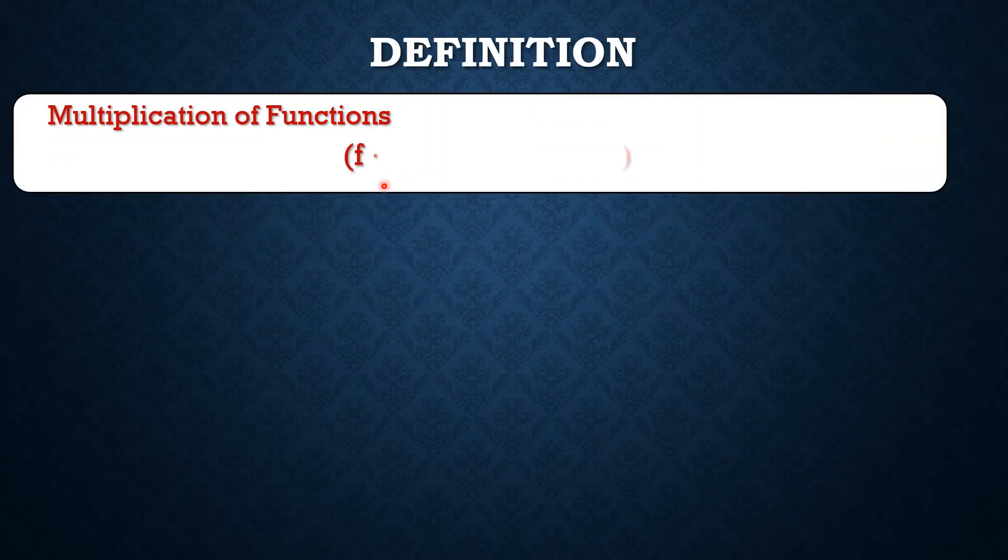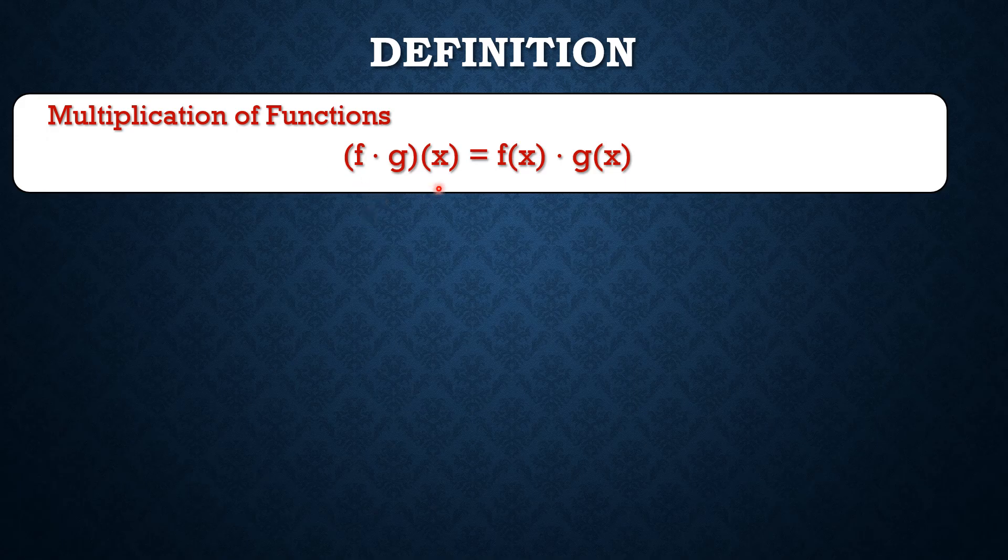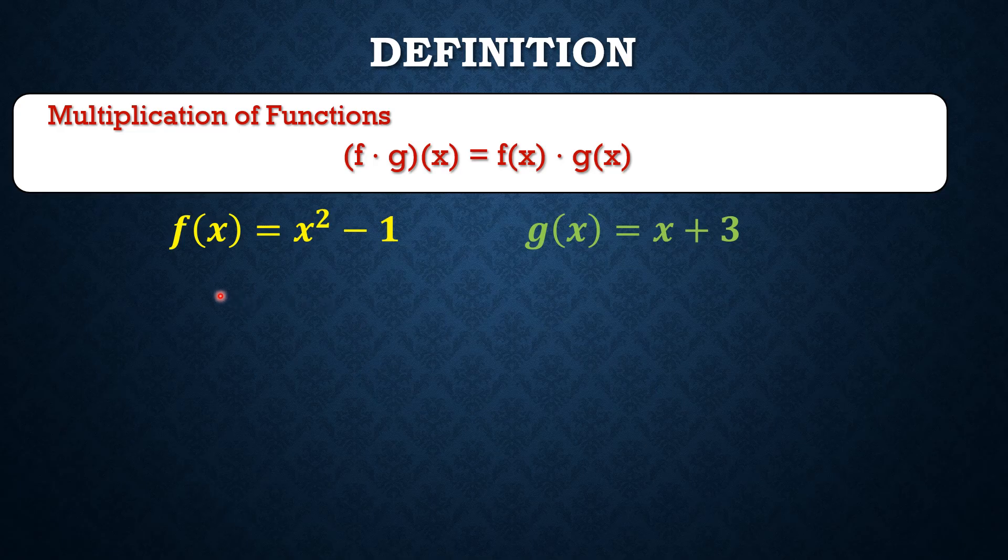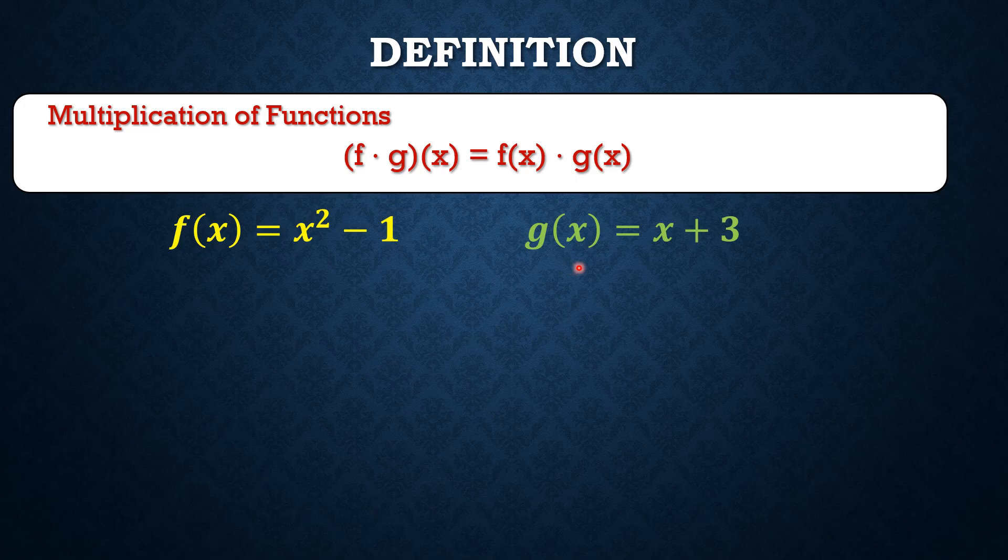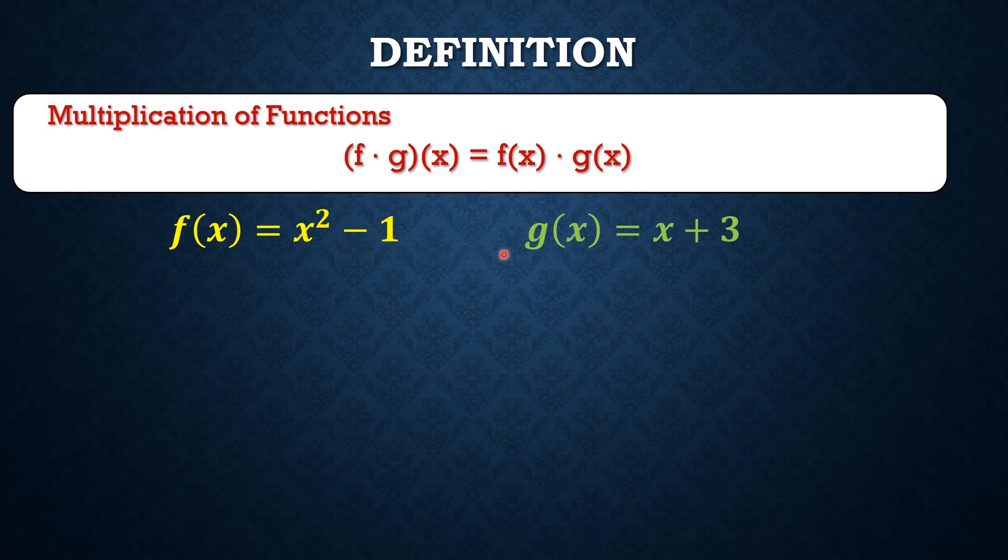By definition, multiplication of functions is given by (f · g)(x) = f(x) · g(x). Suppose we have the functions f(x) and g(x), where f(x) = x² - 1 and g(x) = x + 3.